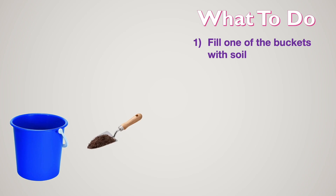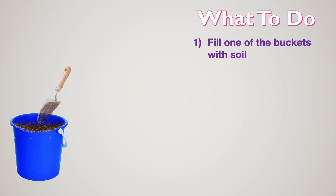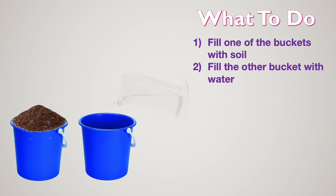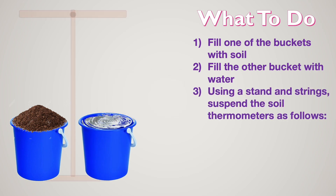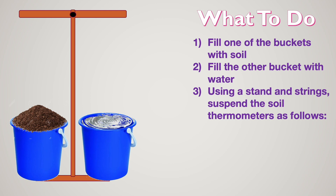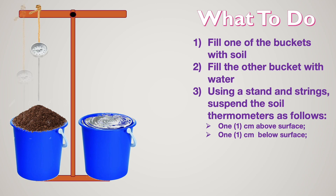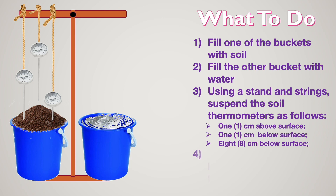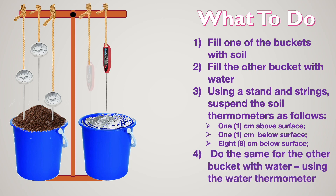First, fill one of the buckets with soil. Then fill the other bucket with water. Next, using a stand and strings, suspend the soil thermometers as follows: one centimeter above the surface, one centimeter below the surface, and eight centimeters below the surface. Then do the same for the other bucket with water using the water thermometers.